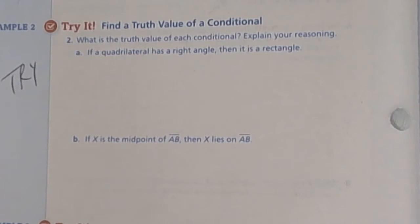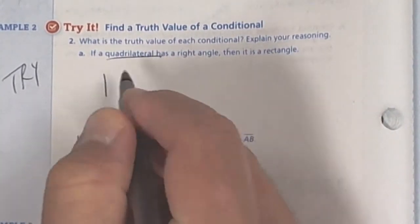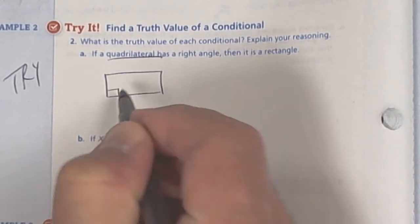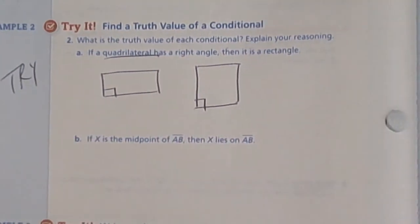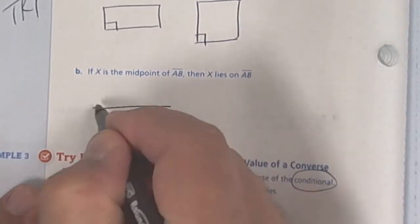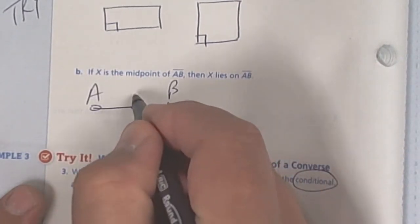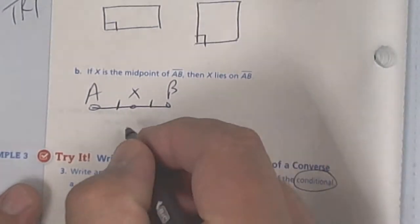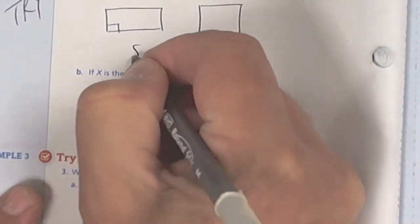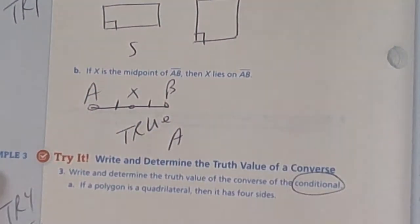The next one says find the truth value. If a quadrilateral has a right angle then it is a rectangle. Well that could be. A quadrilateral is a four-sided figure. So if it has a right angle it could be a rectangle, but it could also be a square. So the truth value would be sometimes. If x is the midpoint of AB, so draw a segment AB and put x as a midpoint and then make that equal to that. X lies on AB. That would be true. If it's a midpoint it's got to be on segment AB. So that would be true. So this one is sometimes. This one is always. And that's what you're doing there.